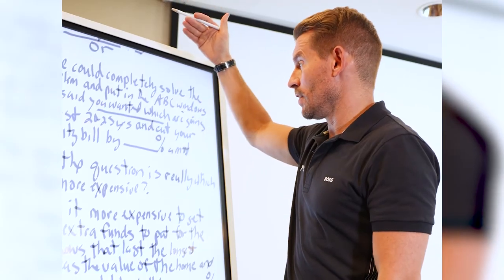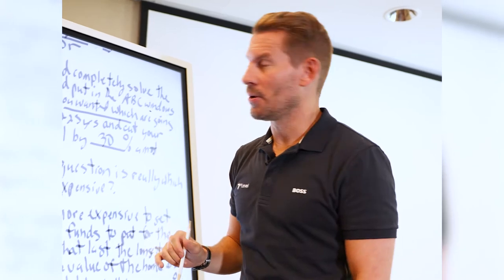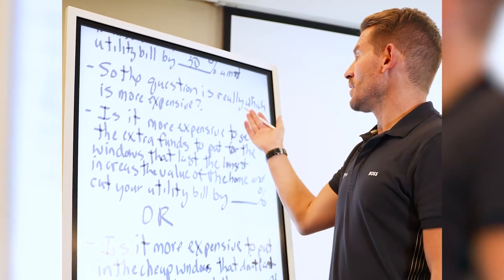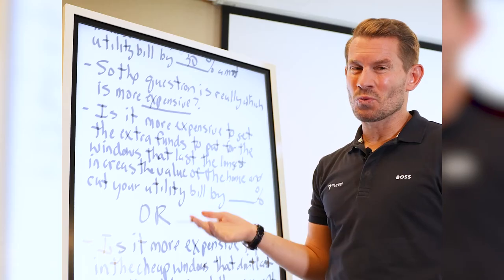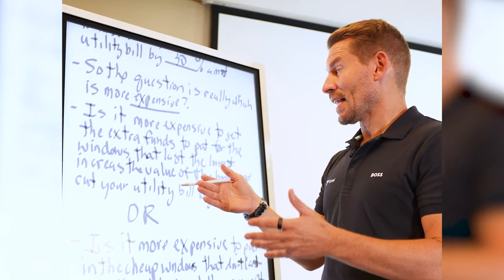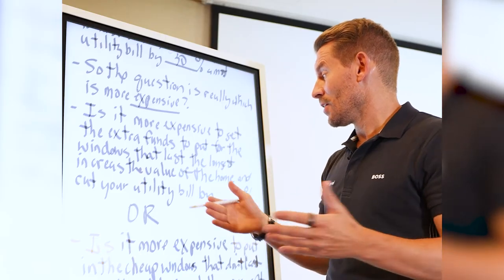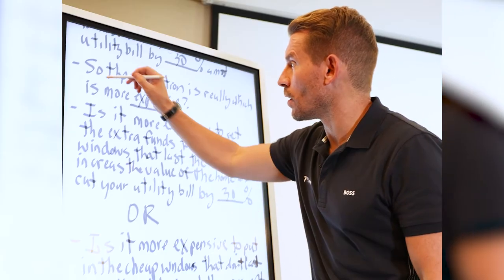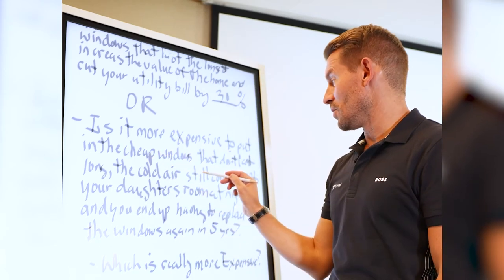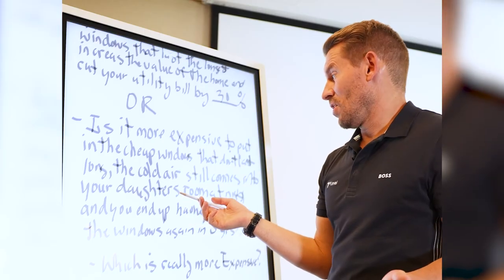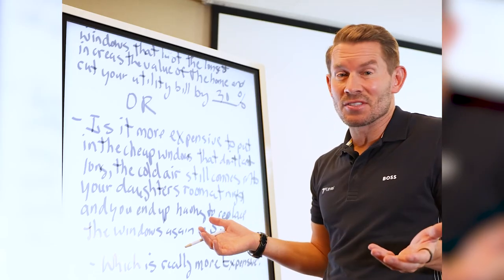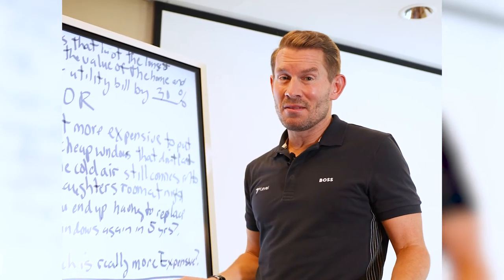Those are going to last twenty to twenty-five years and cut your utility bill down by — let's say — thirty percent. So you give them the three options, results-based thinking. Then ask: 'If you thought about it, which is really more expensive? Is it more expensive to get the extra funds to put in the windows that last the longest, increase the value of your home, and cut your utility bill? Or is it more expensive to put in the cheap windows that don't really last, where cold air still comes into your daughter's room and you end up having to replace them again in five years anyway?'